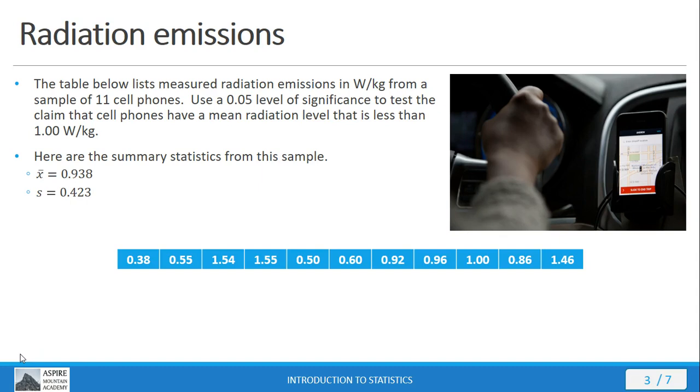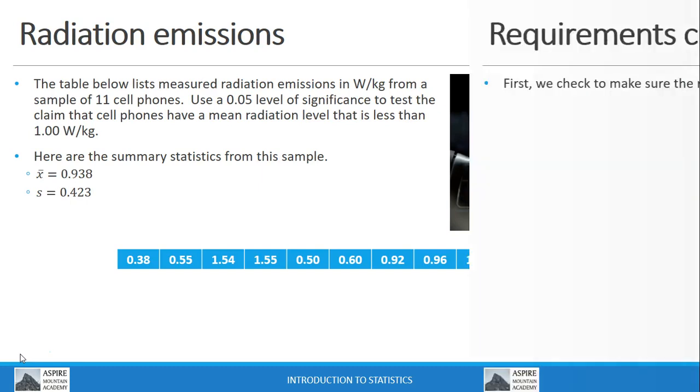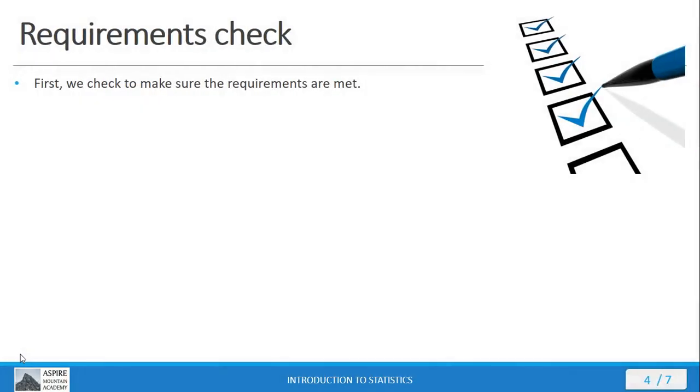In this particular example, we're looking at 5% significance level, or alpha equals 5%, and we're testing the claim that the cell phones have a mean radiation level that is less than 1 watt per kilogram. We have actual data here, so we can put that into StatCrunch if we wanted to, or we can just use the summary stats that are listed there. Either way, we've got to check our requirements first.